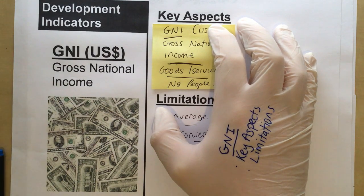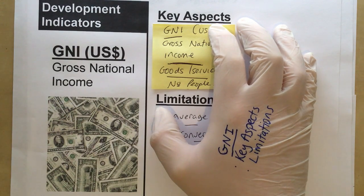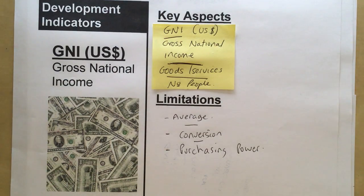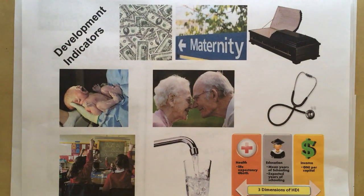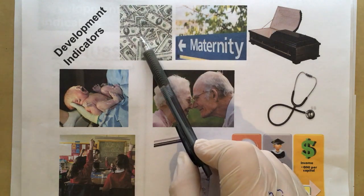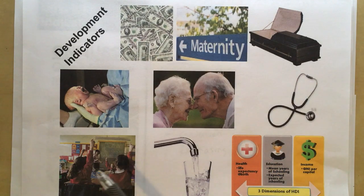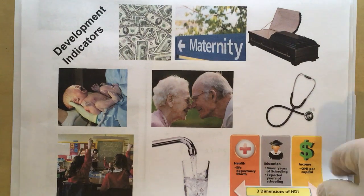Welcome to White Glove Geography. Today we're going to look at development indicators, particularly GNI — Gross National Income. Here's a quick summary overview: we have GNI, gross national income, birth rates, death rates, infant mortality, life expectancy, people per doctor, education, access to safe water, and the composite index which is HDI. Those will be covered in separate videos.